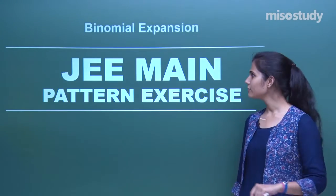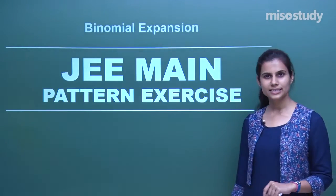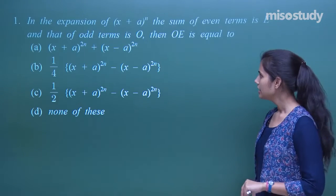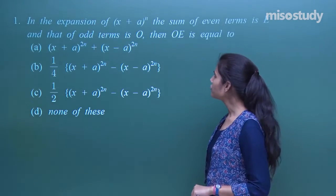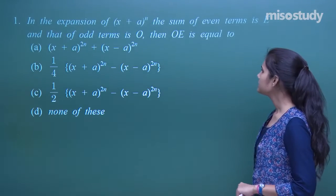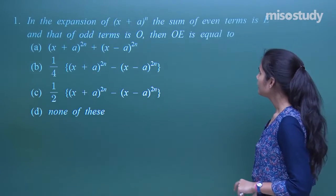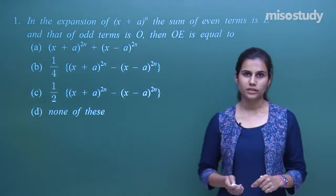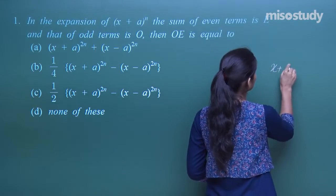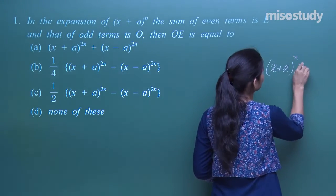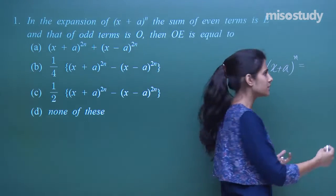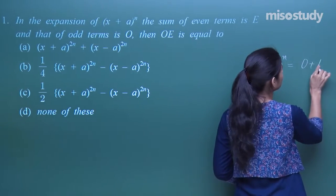Let us start discussing the JEE Main pattern exercises for the chapter binomial expansion. The first question says that in the expansion of (x + a)^n, the sum of even terms is E and that of odd terms is O. Then OE is equal to what? You know that (x + a)^n is equal to the sum of even terms plus the sum of odd terms, so it equals O + E.